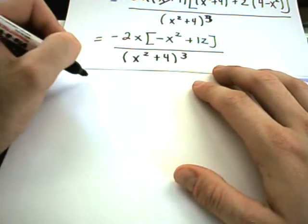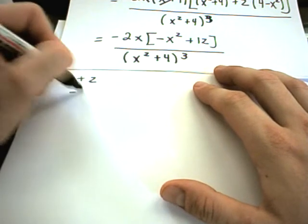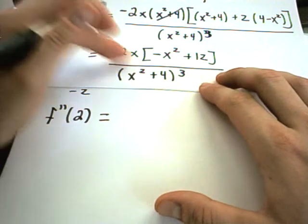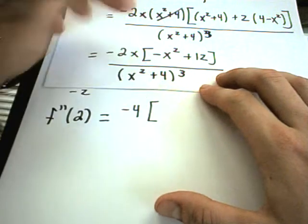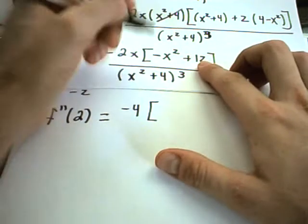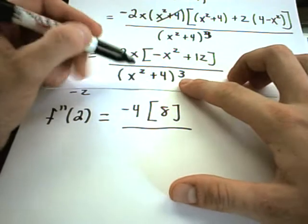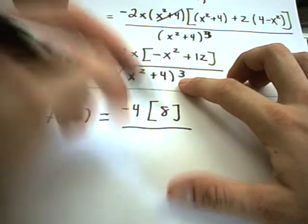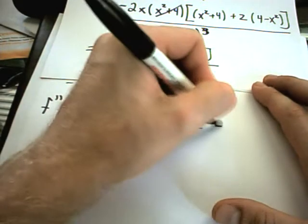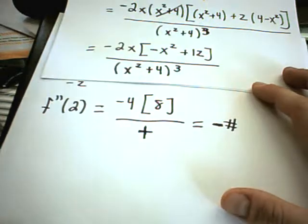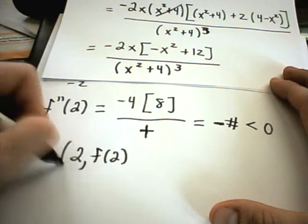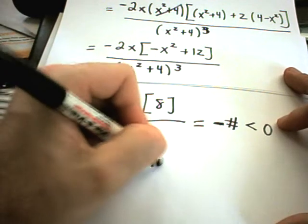The two critical numbers I found were positive 2 and negative 2, so now I need to plug those into the second derivative. If I plug in 2, I get negative 4 for the 2x part. Then negative 4 plus 12 is 8 in the parentheses. On the bottom, since we're squaring and adding 4, the denominator is always positive. So the result is a negative number, which is less than zero. That means the point 2 comma f of 2 is a local maximum.